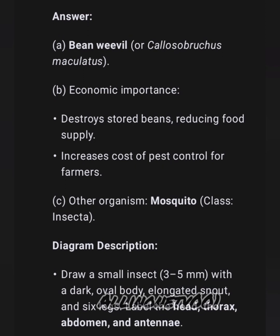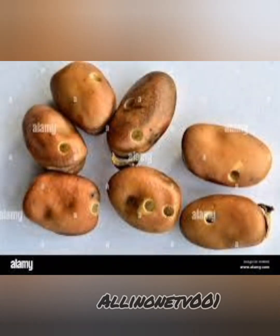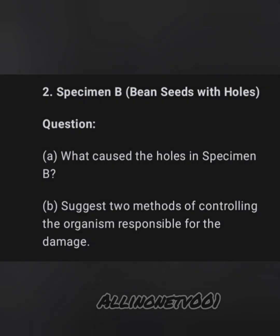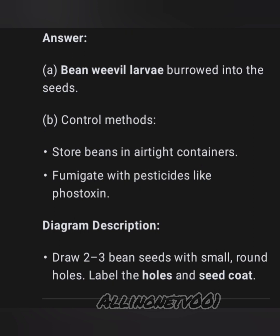Specimen B is the bean seed with holes, as you can see in the diagram. Possible questions: A, what caused the holes in specimen B? B, suggest two methods of controlling the organism responsible for the damage. Answer A: bean weevil larva bored into the seed. Answer B — control methods: store in an airtight container, or fumigate with pesticide. The diagram is shown in the video.